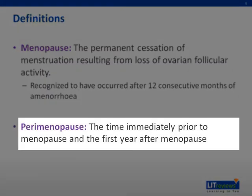Perimenopause is the time immediately prior to and the first year after menopause. It is during this period when the endocrinological, biological, and clinical features of approaching menopause come in.